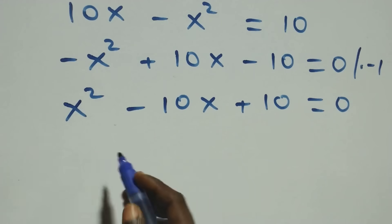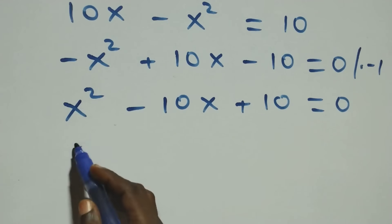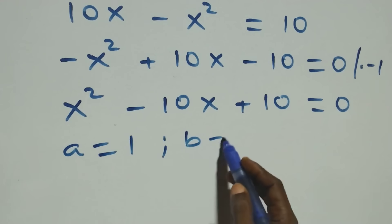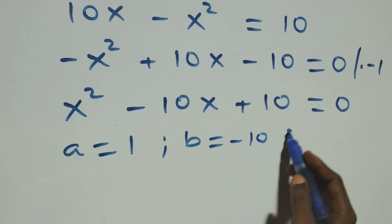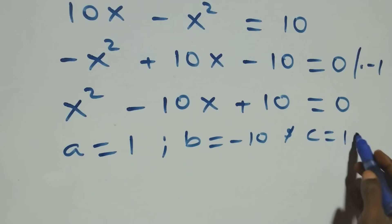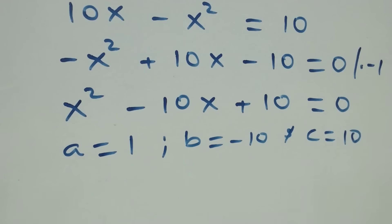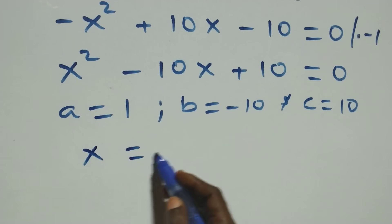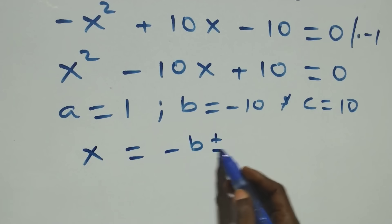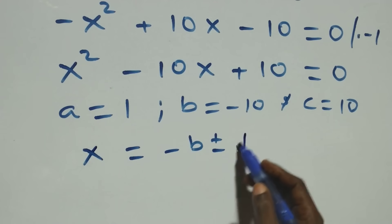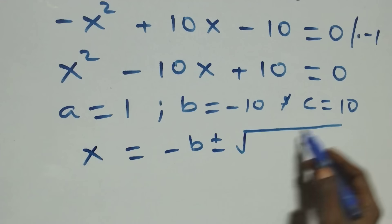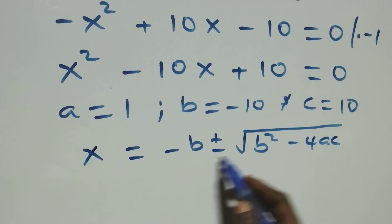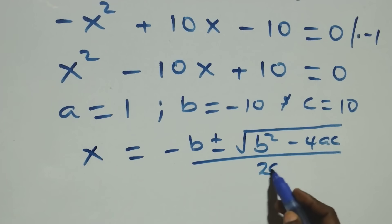We have a quadratic equation where a equals to one, b equals to minus ten, and c equals to ten. We apply the quadratic formula: x equals to minus b plus or minus square root of b squared minus four ac, all over two a.